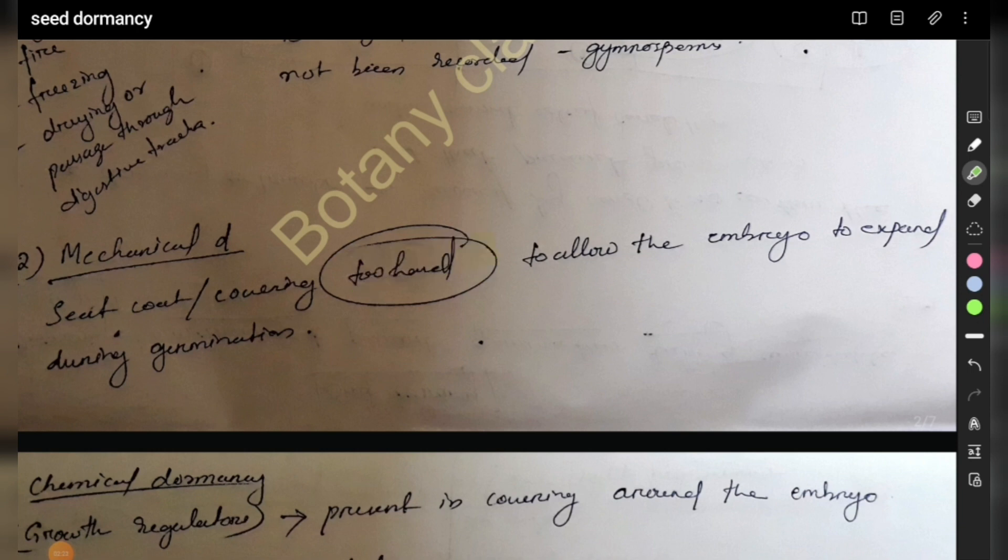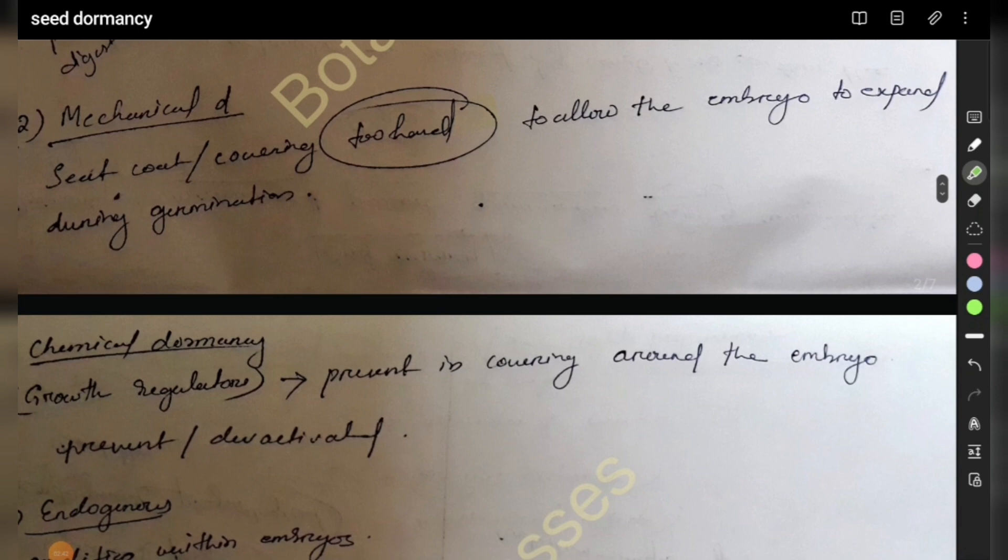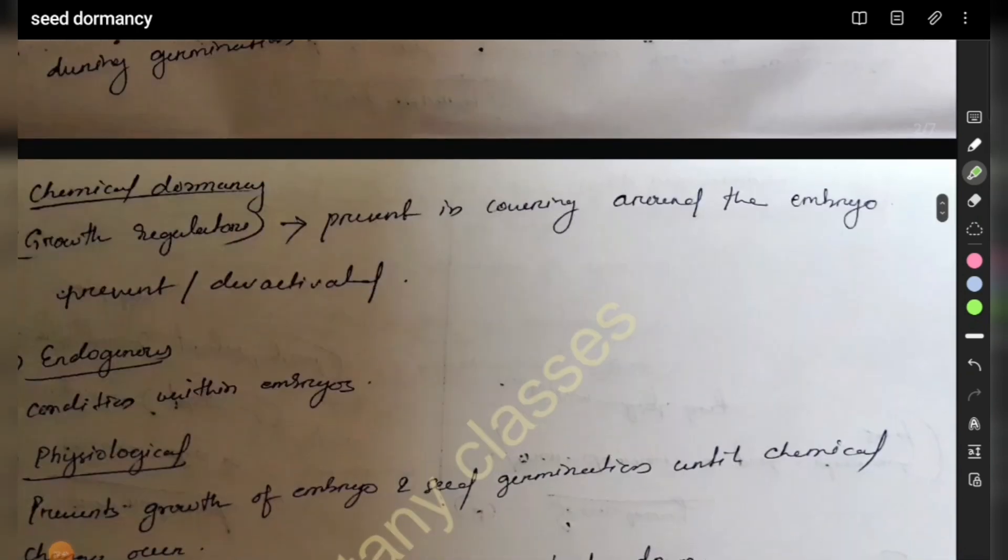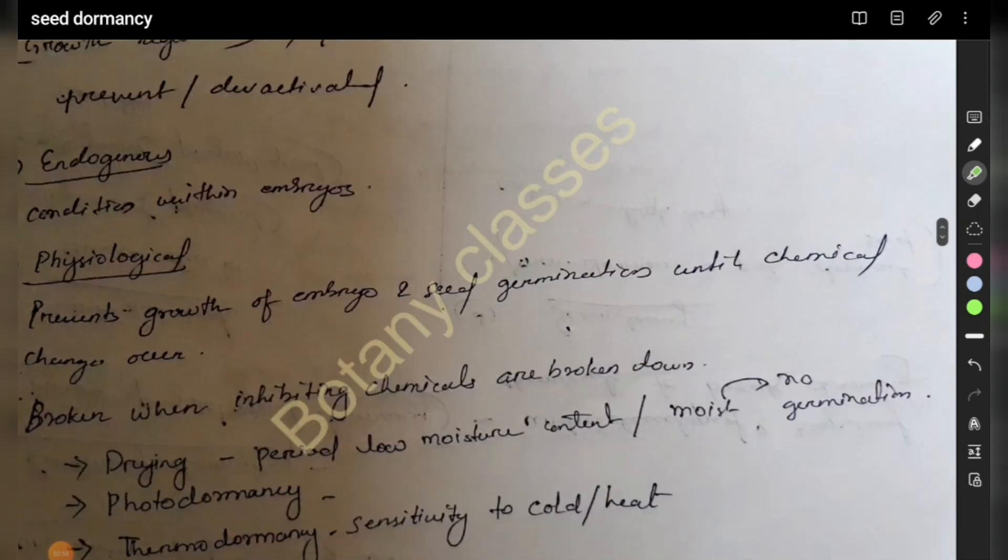The seed is impermeable in certain physical areas. Mechanical dormancy prevents the growth of embryo and seed germination when chemicals cannot be broken down, reducing the ability to break dormancy.